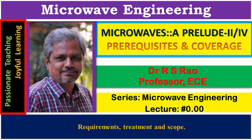Microwave Engineering. Microwaves - a Prelude, Part 2: Prerequisites and Coverage. This is lecture number 0.00 of the series on Microwave Engineering. Microwave systems are systems that use microwaves for their functioning. These systems may be communication systems or non-communication systems, civilian systems or defense systems, or medical systems. The most important microwave system is radar.